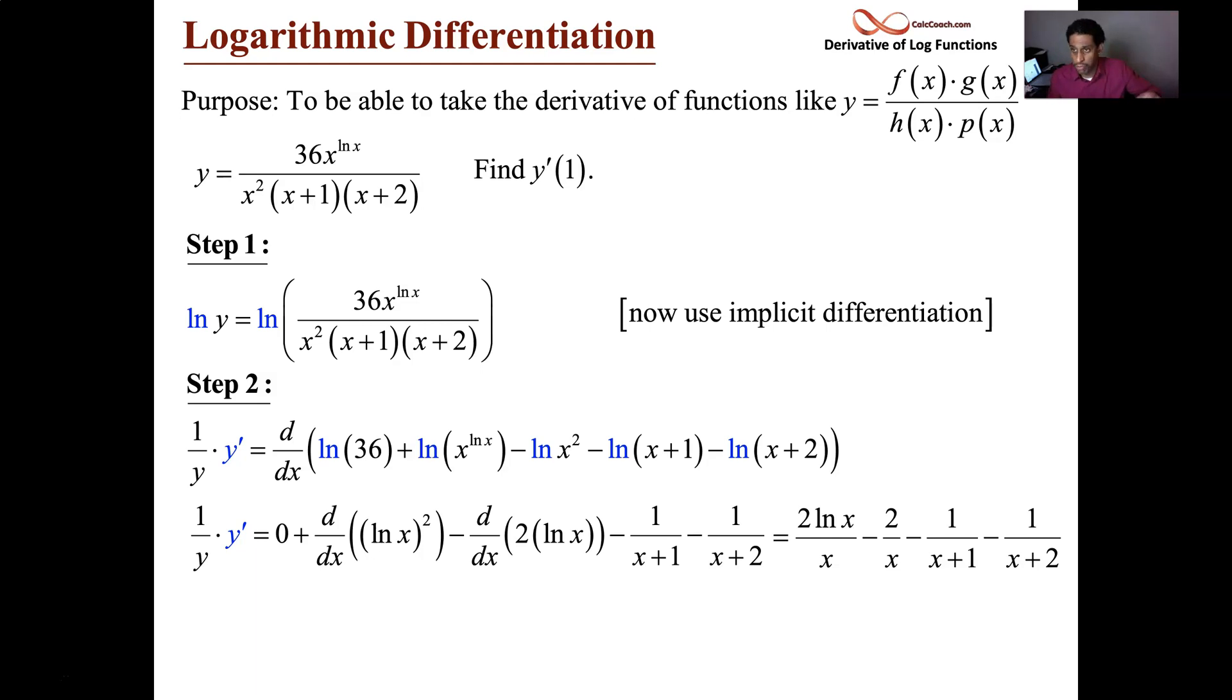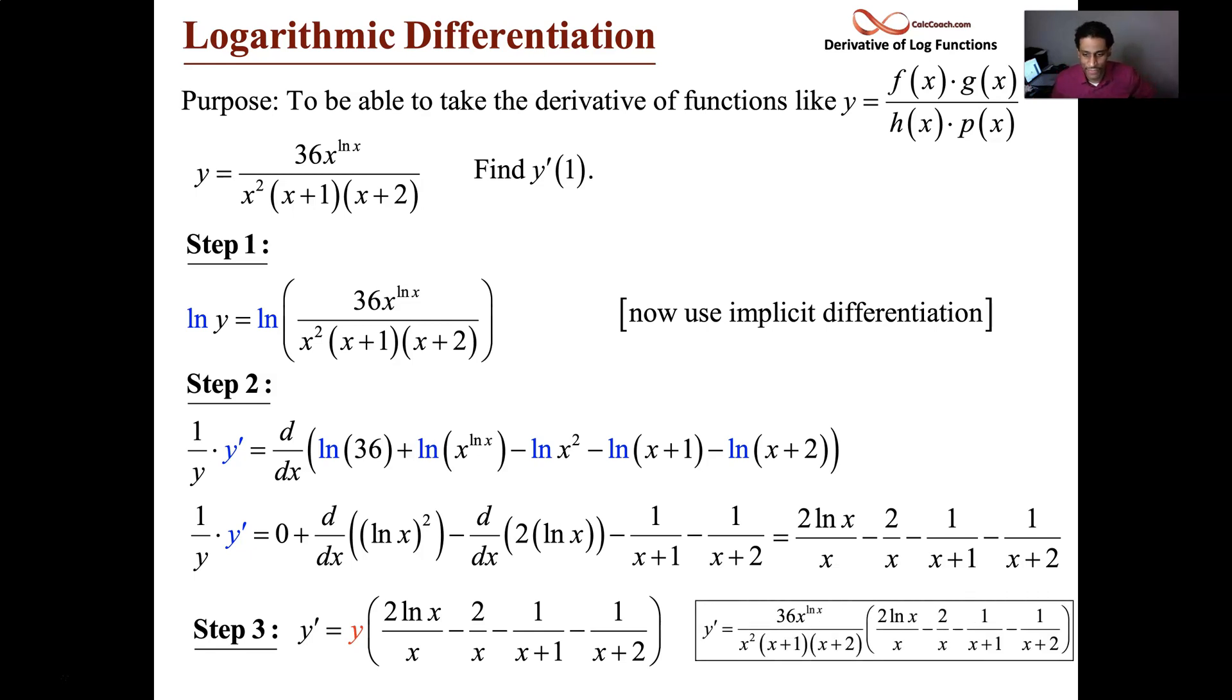And just like before, our derivative, y prime, is equal to y times that derivative. We'll go to the next slide and do the calculation. Remember to put in the replacement to what y was, so that you don't have a y in your derivative. So, just like before, your derivative is going to be your original function times the derivative of your fraction with a natural log on it. And then the natural log allowed us to break it up into many pieces and take those individual derivatives.